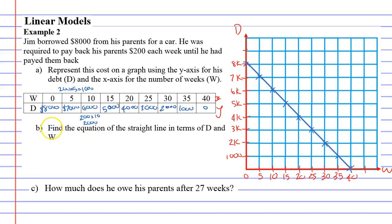Question B says find the equation of the straight line in terms of D and W. So we start with our gradient intercept formula. Y equals mx plus b. And probably the easiest one to find would be your y-intercept, which in this case is 8,000. Y-intercept being where it crosses the y-axis or the d-axis in this case. And m stands for gradient.